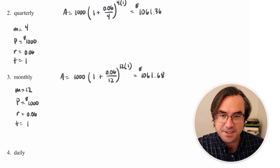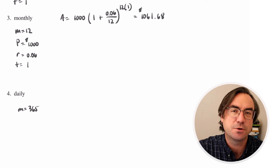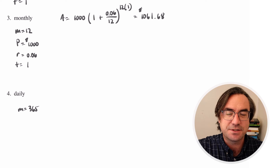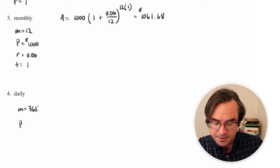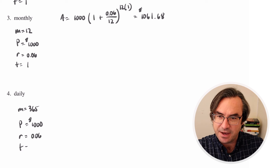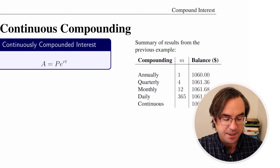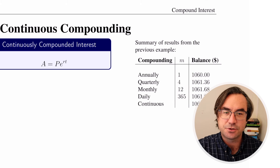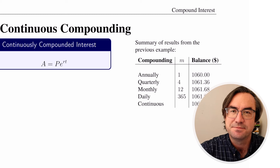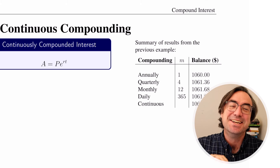We could also try daily compounding — for simplicity, we'll assume 365 days, so m equals 365. The principle is still $1,000, interest rate 0.06, and t equals 1. That's a good one for you to try out. What we're going to see in class is that as these m values get larger and larger, we approach a limit — there's a limit to how much the compounding frequency can impact the balance over one year. And to spoil it, it's going to involve e. We'll see that in class. Bye-bye.